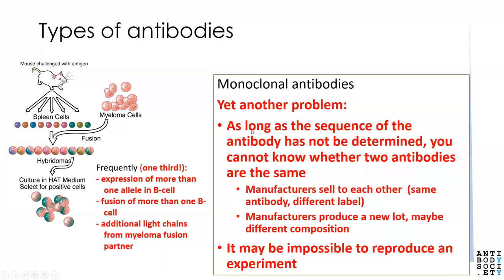There's another problem: as long as the sequence of the antibody has not been determined, you cannot know whether two monoclonal antibodies are the same. Manufacturers sell to each other and just slap another label on, so you think you're buying different antibodies but you're always buying the same ones with a different label. Also, if manufacturers run out of a hybridoma — for example if the cell dies — they produce a new lot, maybe with a different composition. So you think you buy the same antibody but you actually get a different one, and again it may be impossible to reproduce an experiment because of these issues.